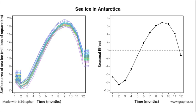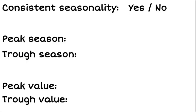Let's look at the example of sea ice in Antarctica. The first thing we want to do is identify whether we have a seasonal graph — yes or no. Is there a consistent seasonal pattern? I can see that all of the values first head down, then go upwards, then go downwards, and that pattern is the same for all years. So yes, I do have a consistent seasonal pattern.